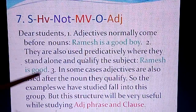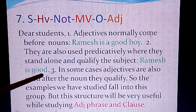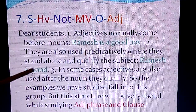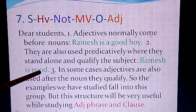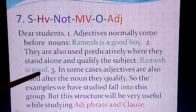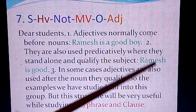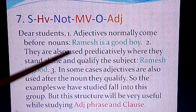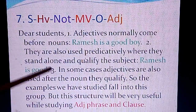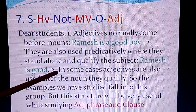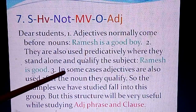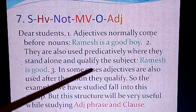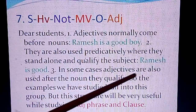In 'Ramesh is good,' 'Ramesh' is the subject and 'is good' is the predicate. In this predicate, 'good' stands alone and refers back to Ramesh. This is the second use of the adjective — predicative use.